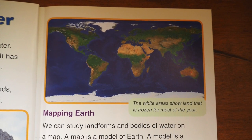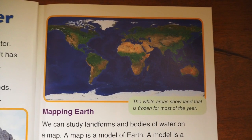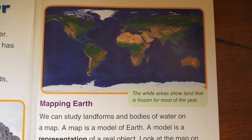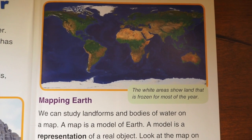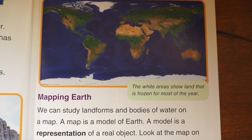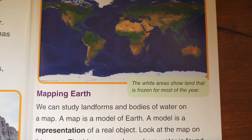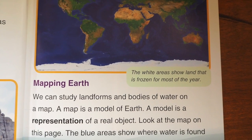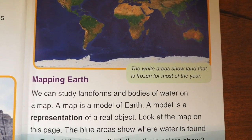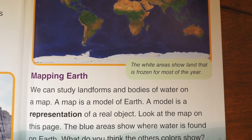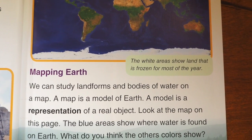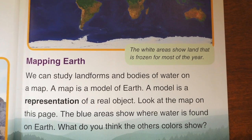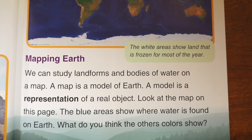We can study landforms and bodies of water on a map. A map is a model of Earth. A model is a representation of a real object. The blue areas on a map show where the water is found on Earth. The other colors show where land is found.